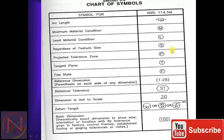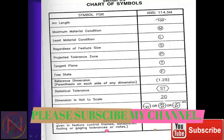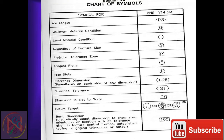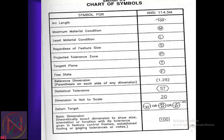Some additional symbols are given: the reference plane — the diamond symbol — for maximum material condition that is M in a circle. L in a circle is least material condition. S is regardless of feature size. P is tangent plane. The reference dimension is a dimension placed in brackets. The statistical tolerance length symbol is also shown.